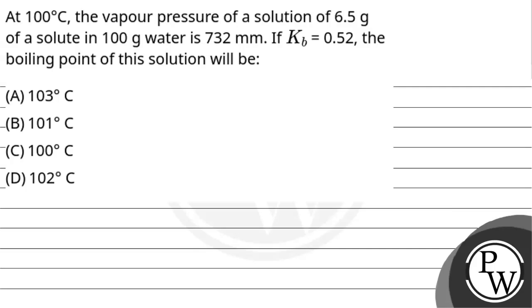Let us read out this question and solve it. The question is: at 100 degrees Celsius, the vapor pressure of a solution of 6.5 grams of a solute in 100 grams water is 732 mm.